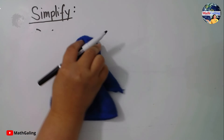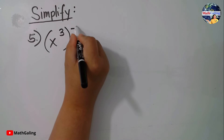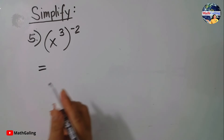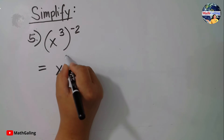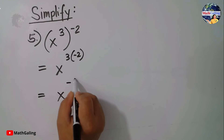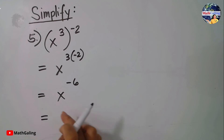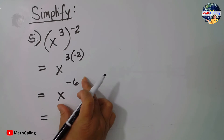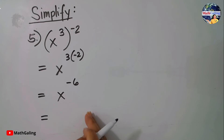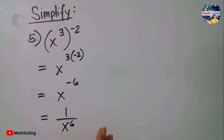For number 5, we have x to the third power raised to a negative 2. Following the power law, you have x and 3 times negative 2. This will be x to the negative 6. Technically this is correct, but if you want to simplify further, there is another law of exponents that deals with negative powers — you can make the exponent positive by bringing it down to the denominator: 1 over x to the 6.